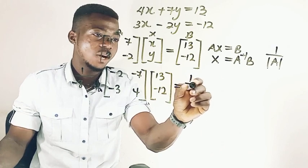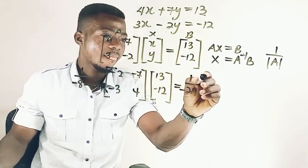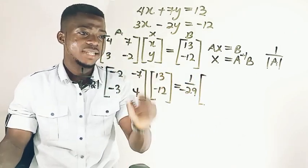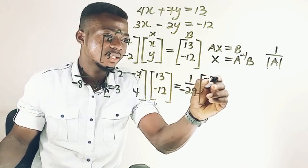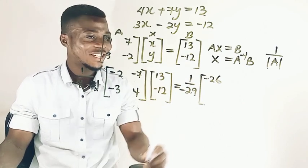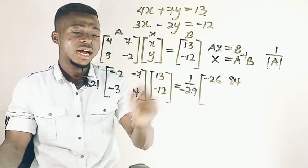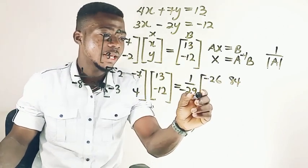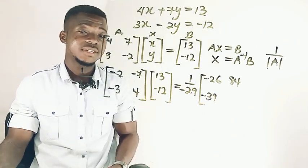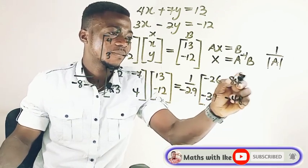So let's do it. Now, this one will give us 1 over minus 29. Now, let's multiply. Negative 2 times 13 is going to be negative 26. Then negative 7 times negative 12 is going to be 84. Then negative 3 times 13 is going to be negative 39. Then 4 times negative 12 is going to be negative 48.